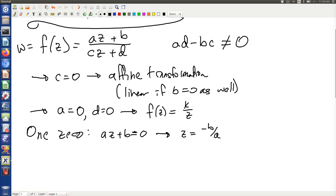And one pole, that's where cz + d equals zero. Of course, z equals negative d over c in that case.